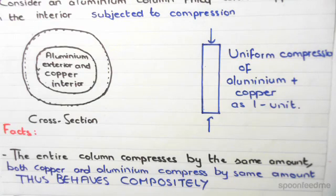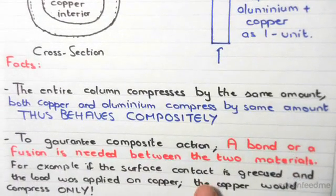So, how do we make composite action work? We need a bond. Otherwise, it's not going to work. So, to guarantee the success of composite action, a bond or a fusion is needed between the two materials.